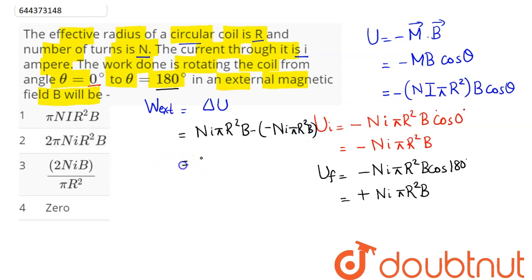So this comes out to be 2 times N I pi R square into B.